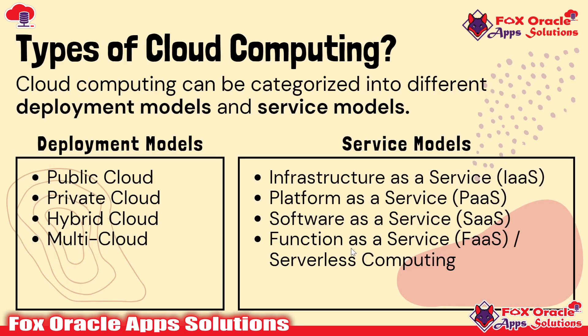Let's talk about the types of cloud computing. Cloud computing can be categorized into two major modules: the deployment modules and the service modules. In the deployment modules, it comes under four different modules — the public cloud, private cloud, hybrid cloud, and the multi-cloud. In terms of services, we again have four modules: Infrastructure as a Service known as IaaS, Platform as a Service known as PaaS, Software as a Service known as SaaS, and Function as a Service or serverless computing.